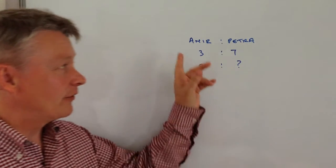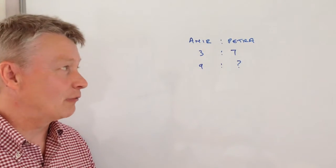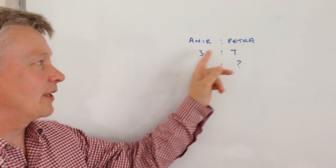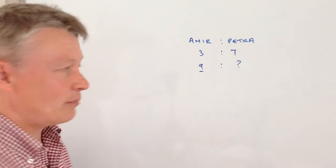but basically we've got two people, Amir and Petra, and the ratio of their ages is 3 to 7. So what they're saying is that Amir's age is 9, and how old is Petra?